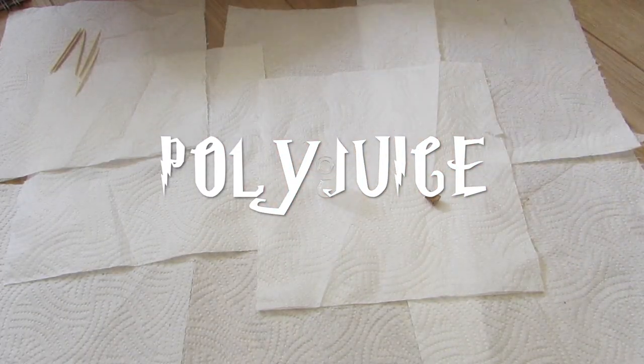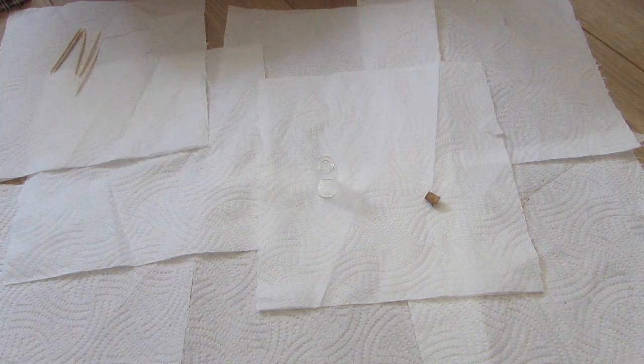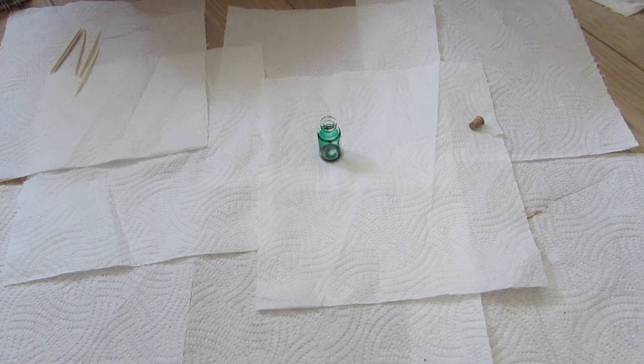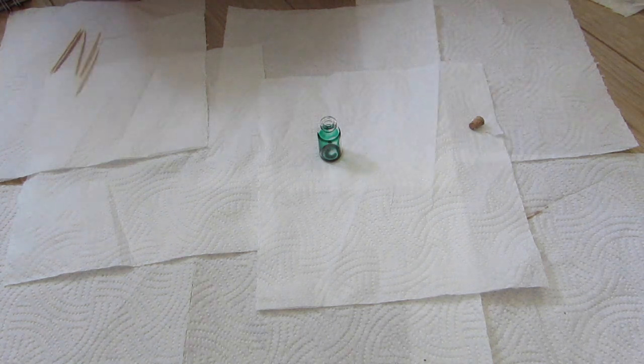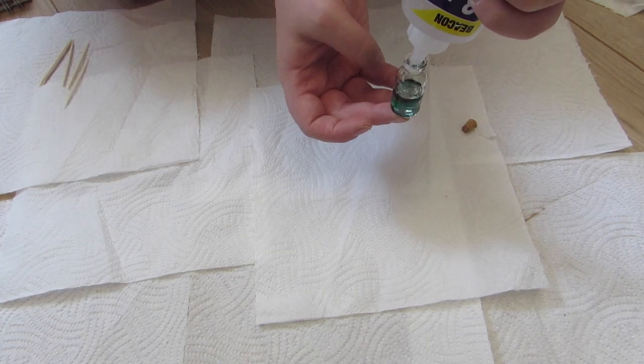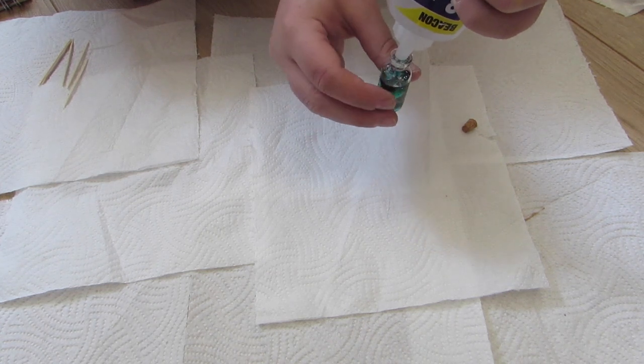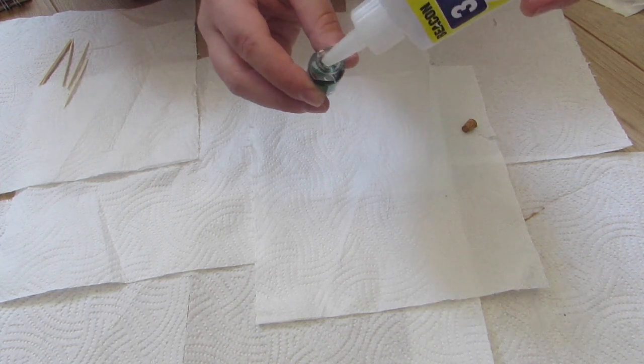The next potion I'm going to make is the Polyjuice Potion. Now this one is open to interpretation because the colour will change depending on the person you're turning into, but I've chose to go full green. This is probably the easiest one. I've literally just put a few drops of green food colouring in and then I'm just topping it up with clear glue and mixing it up.